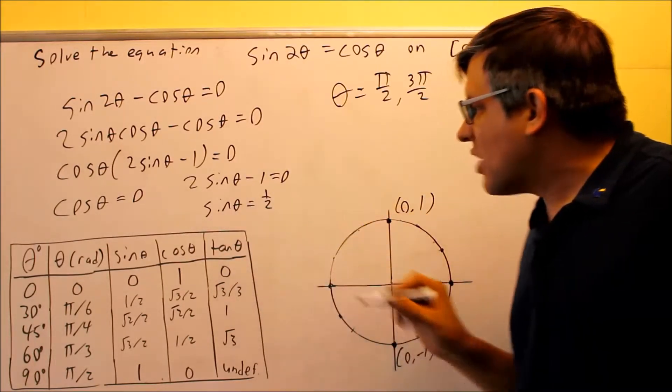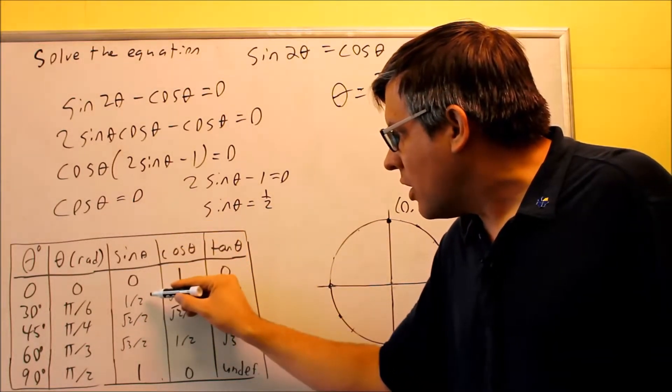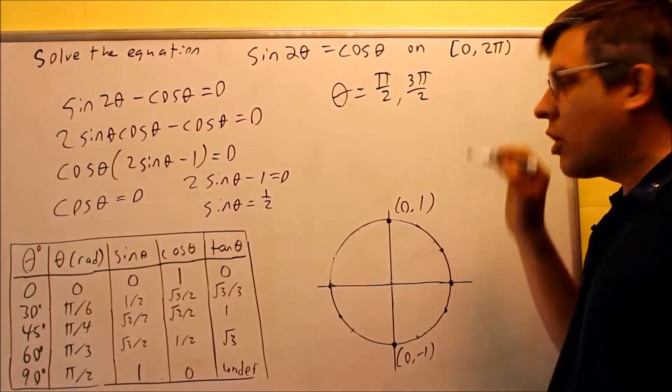Okay, now next, I want to look at sine theta equals 1 half. If I go to sine theta and go down to 1 half, that's this one right here. The reference angle is pi over 6 this time. Again, we're working with radians.